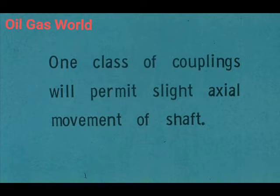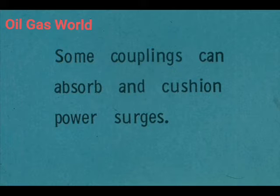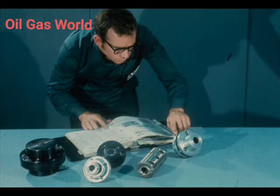Certain couplings are designed to permit a small amount of axial movement of the shaft during operation. There are also special couplings that are designed to absorb and cushion power surges between the driver and the driven equipment. These advantages and disadvantages of certain types of couplings are taken into account when selecting a coupling for a specific application. In short, the needs are determined and a coupling is selected to meet those needs.